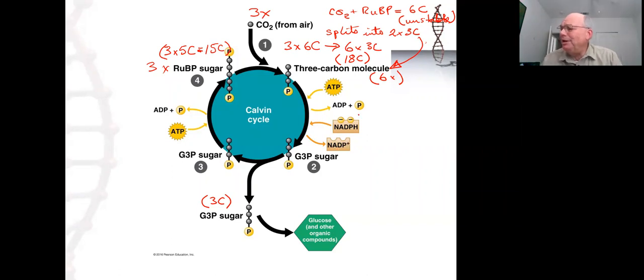We then use the ATP and the NADPH that we got from the light reactions. One ATP for each three-carbon molecule, one NADPH for each three-carbon molecule. So six ATP, six NADPHs.